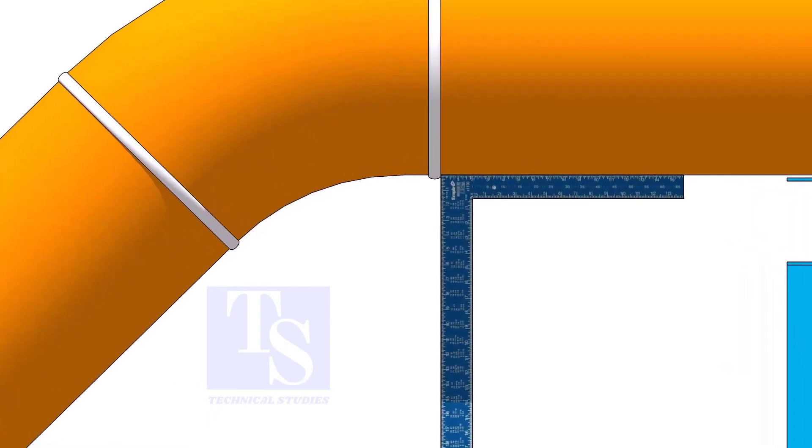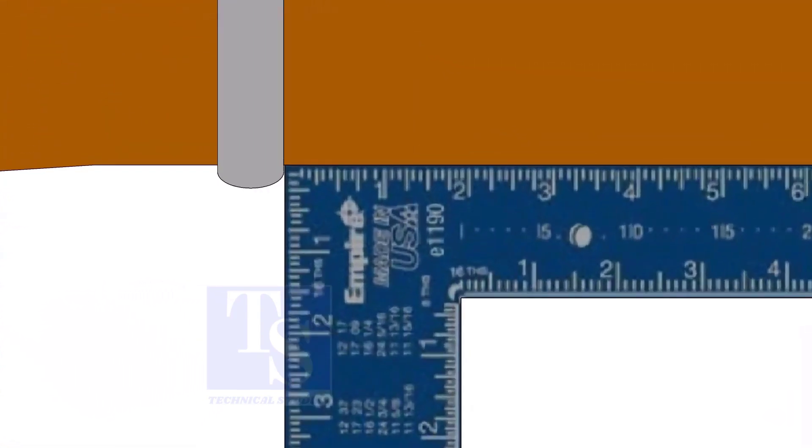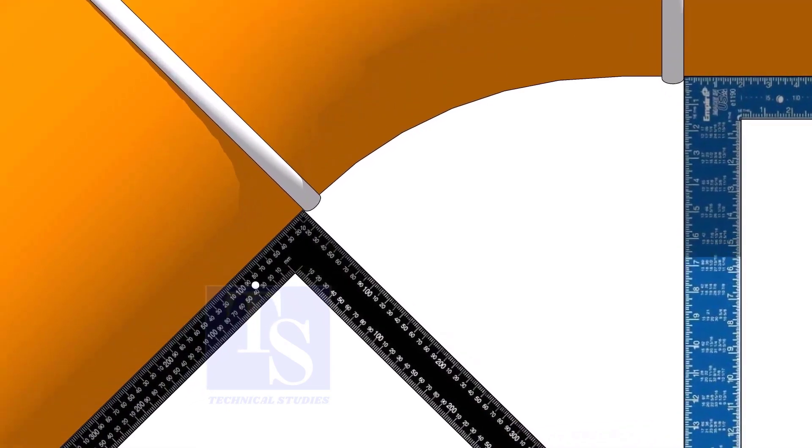Hold one right angle on the pipe just outside the weld joint, as shown. Hold another right angle on the other pipe. Make sure both the right angles are sitting on the center of the pipe.